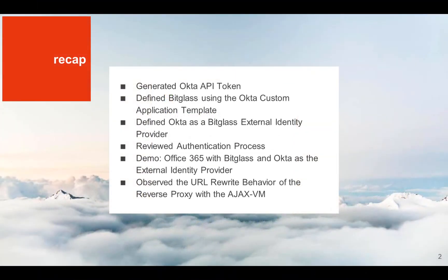Let's do a quick recap. We started things off by generating a new API token within Okta. Then we defined Bitglass using the custom application template in Okta. Then we went and mirrored things in Bitglass by adding Okta as an external identity provider in Bitglass. We reviewed the authentication process at a high level and then illustrated the step-by-step browser, application, and service provider interactions with the flowchart. We then logged into Office 365 via Bitglass and Okta to demonstrate the user experience. And lastly, we looked at how to determine the user is accessing Office 365 through the reverse proxy by reviewing the URLs in the address bar, and we also sampled some of the real-time data protection mechanisms that Bitglass brings to the table.